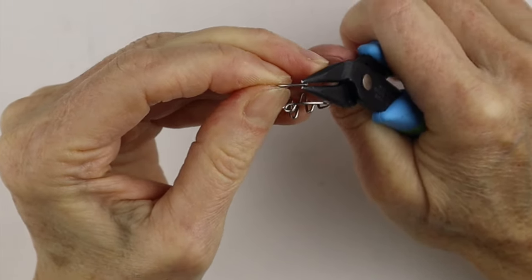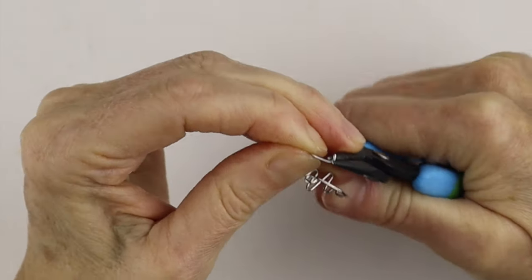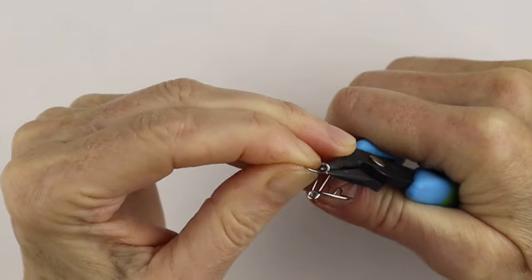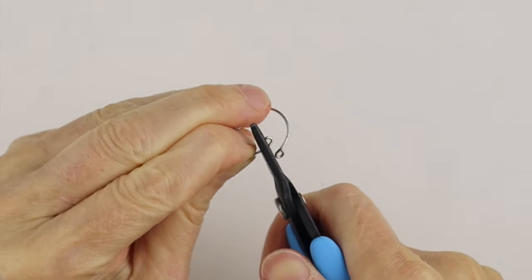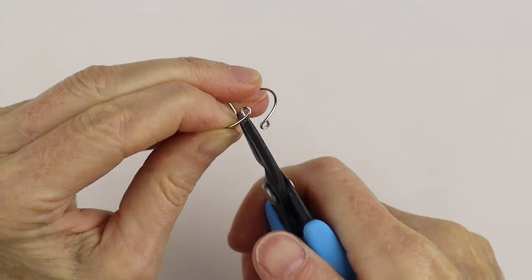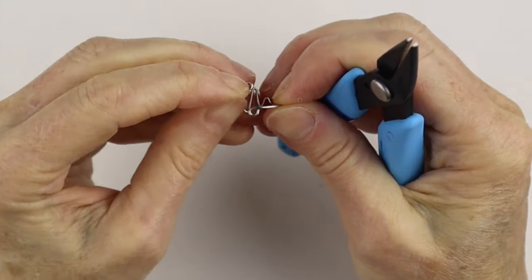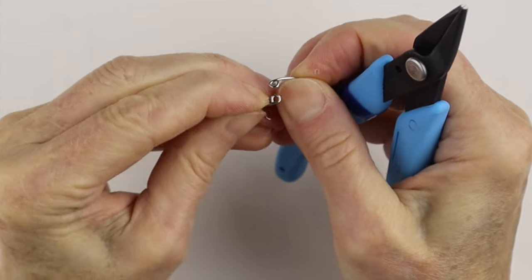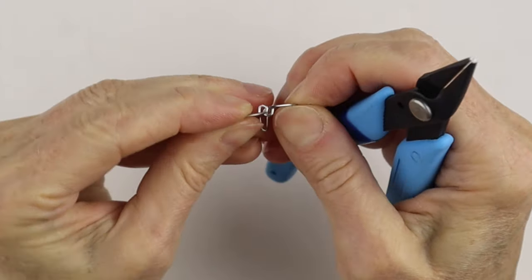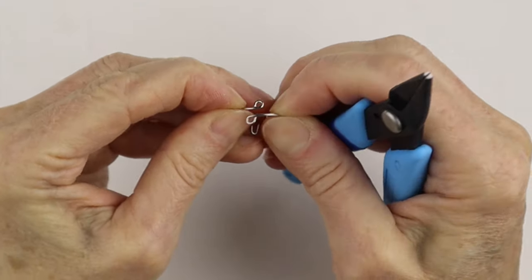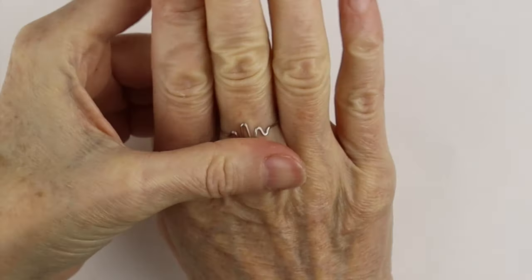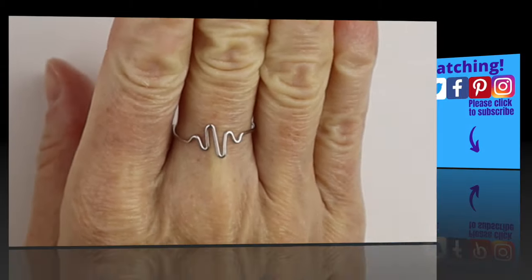You can just adjust these, make them a little more flat if you like. If they're too far apart, just kind of bend them that way and back so they're in the position that you like. Then you can just put it on and there's your heartbeat ring.